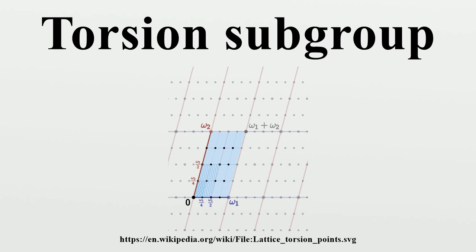As explained in more detail in the article on rank of an abelian group, an abelian group A is torsion-free if and only if it is flat as a Z-module, which means that whenever C is a subgroup of some abelian group B, then the natural map from the tensor product C⊗A to B⊗A is injective.